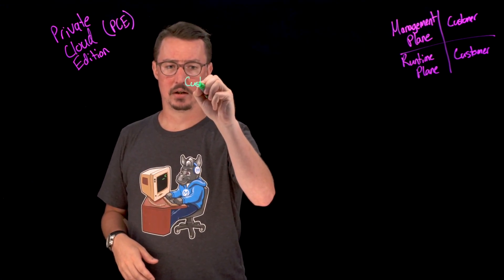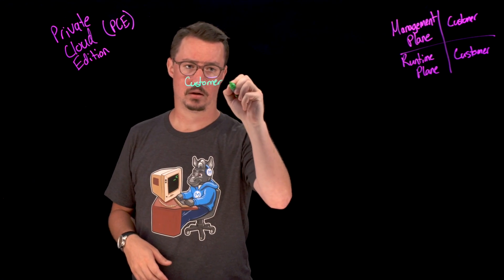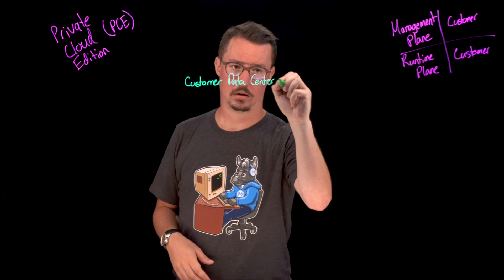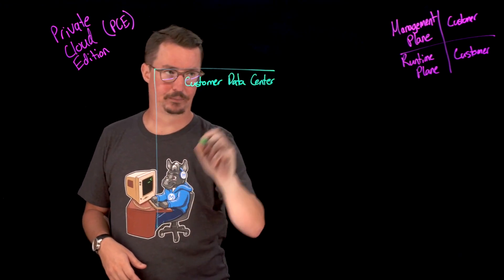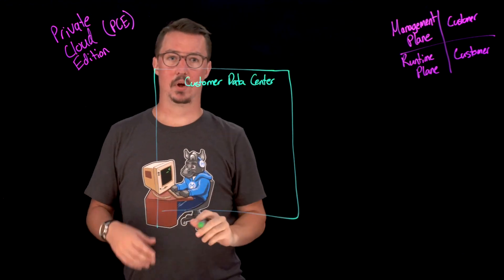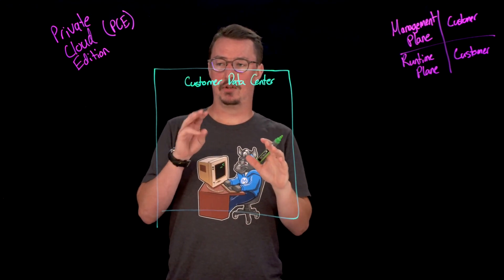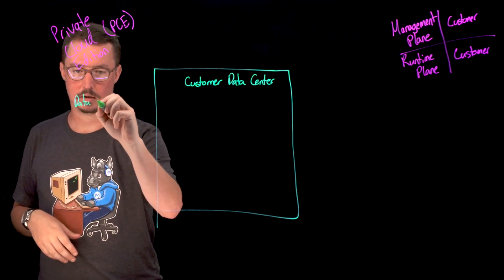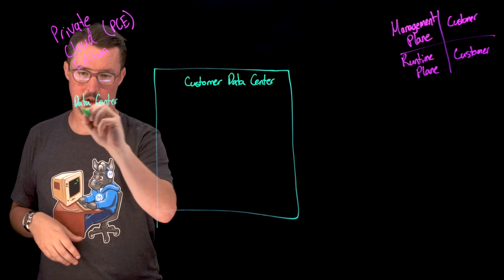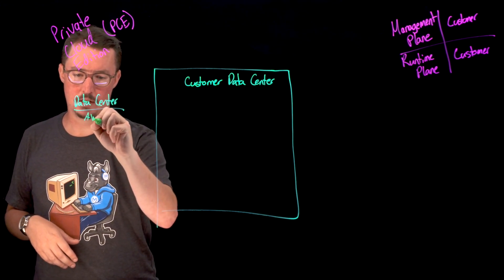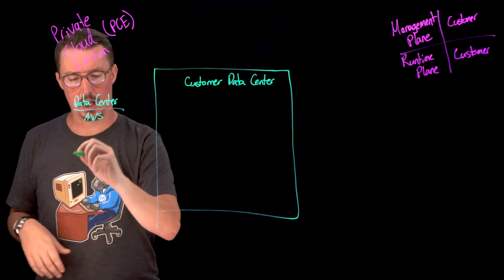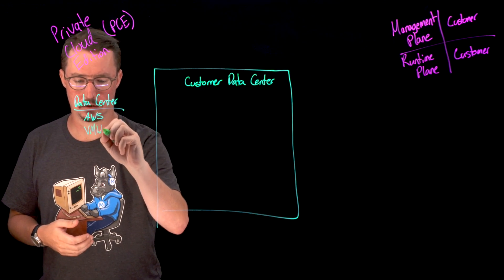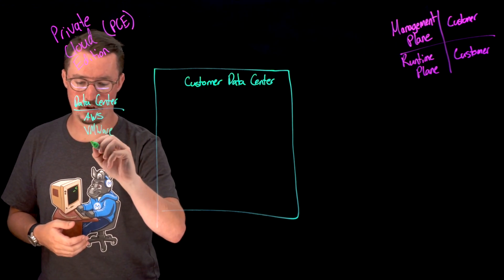We're going to talk about our customer data center. The customer data center will essentially be able to be hosted in three different locations: that's going to be on AWS, or if we are hosting in just a regular data center, that can be hosted on VMware or just bare metal servers.